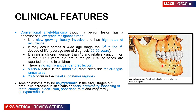About 66% arise from the molar-angle-ramus region, and the next common site is near the symphysis menti, accounting for about 10 to 11%. About 20% of ameloblastomas are found in the posterior regions of the maxilla. Most ameloblastomas are asymptomatic in the early stages but can gradually cause symptoms.